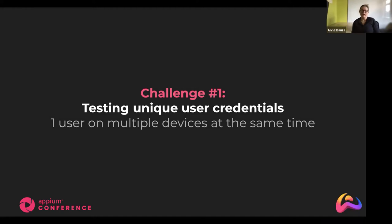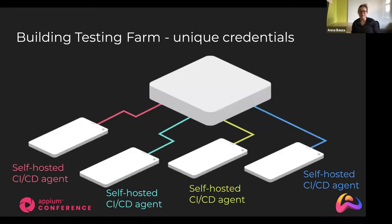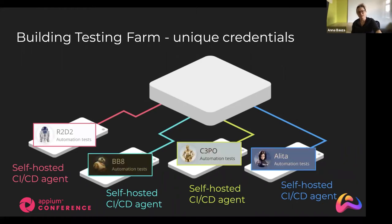The first challenge is testing unique user credentials. Whenever I'm logging in as a user, I don't want to conflict with other running tests at the same time. What we did was build our own testing farm. Building a testing farm gives us amazing flexibility — we can run self-hosted agents and assign a single agent to a single device. In the environment, we encapsulate that each single device has single credentials. So our tests, whenever assigned to an agent and device, run in parallel but do not conflict with each other because the users are different.